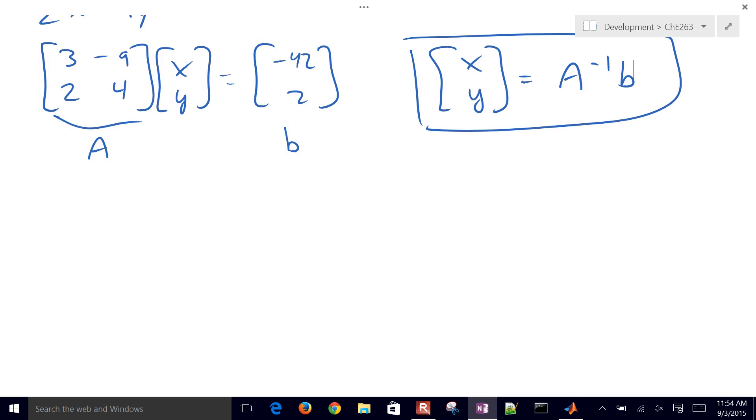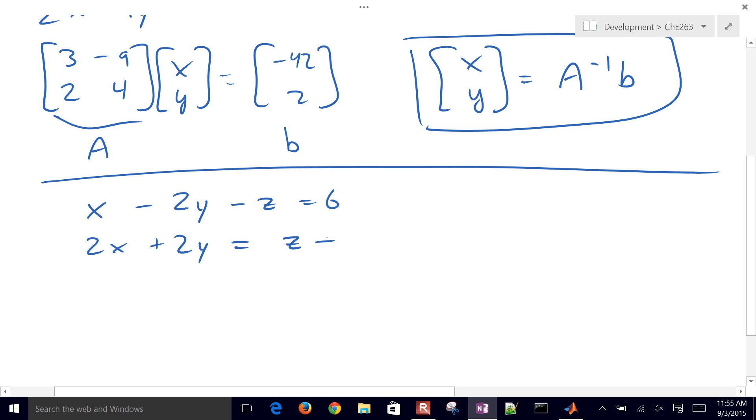So let's go ahead and do another set of equations. In this case, we'll add another variable, Z. And so if you want to, just go ahead and try this one. It'll be X minus 2Y minus Z equals 6. And then another equation, which will be 2X plus 2Y equals Z plus 1. And then a third equation, which is going to be 2 times Z minus 1 equals Y plus X.